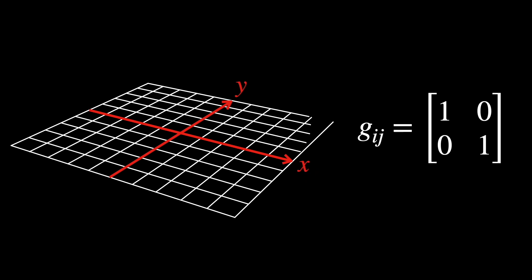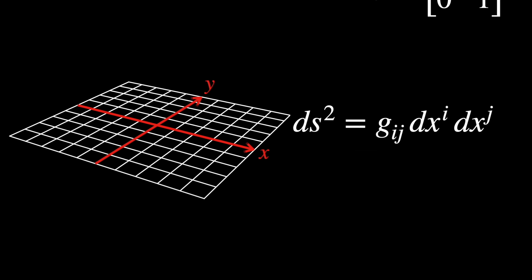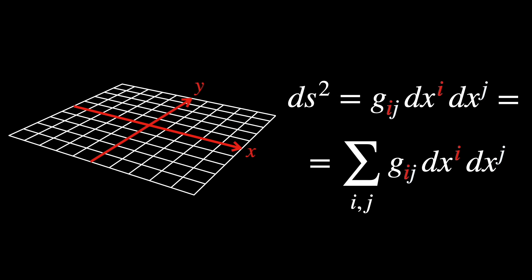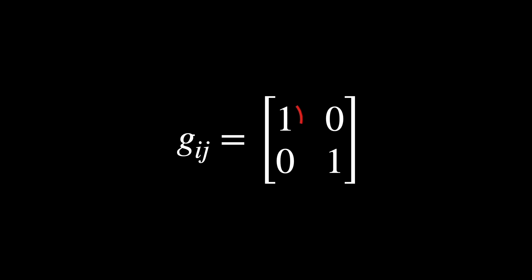Let's pick a simple flat two-dimensional space with Euclidean metric. We can also write it in this form, using the summation convention for matching upper and lower indices.